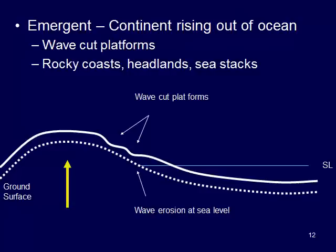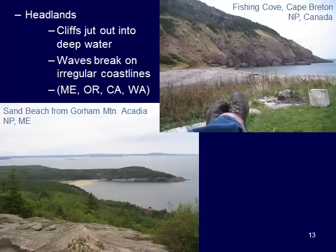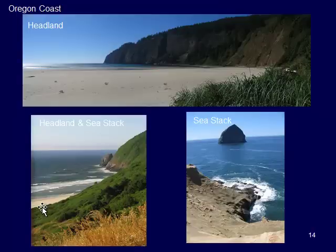Some other examples of headlands and sea stacks: a headland is a rocky outcrop that jets out into the water. Usually we have these fingers sticking out into the ocean with a bit of a sandy beach in the middle, a little more protected. We see these in Maine, Oregon, California, and Washington. We also tend to see sea stacks — here's a headland sticking out, another headland with a little sea stack, a sandy beach in between, and then another sea stack, all on the actual Oregon coast.